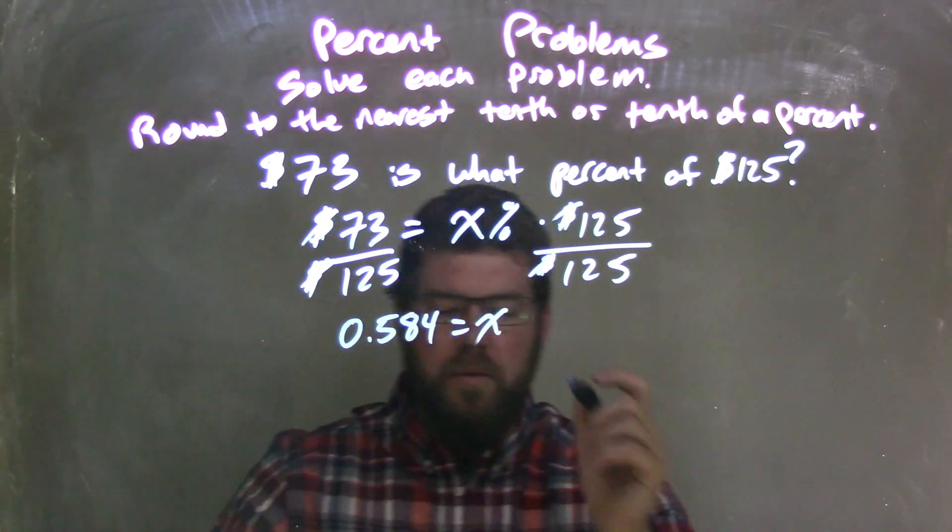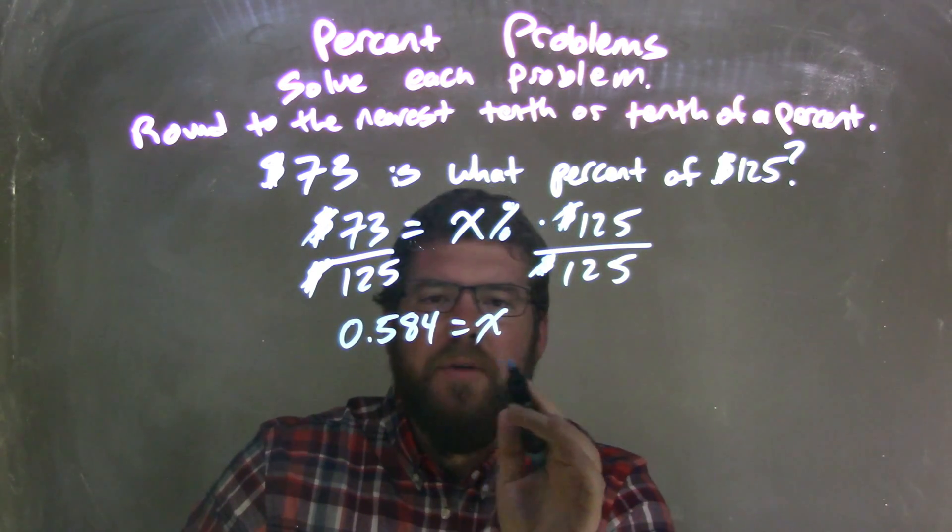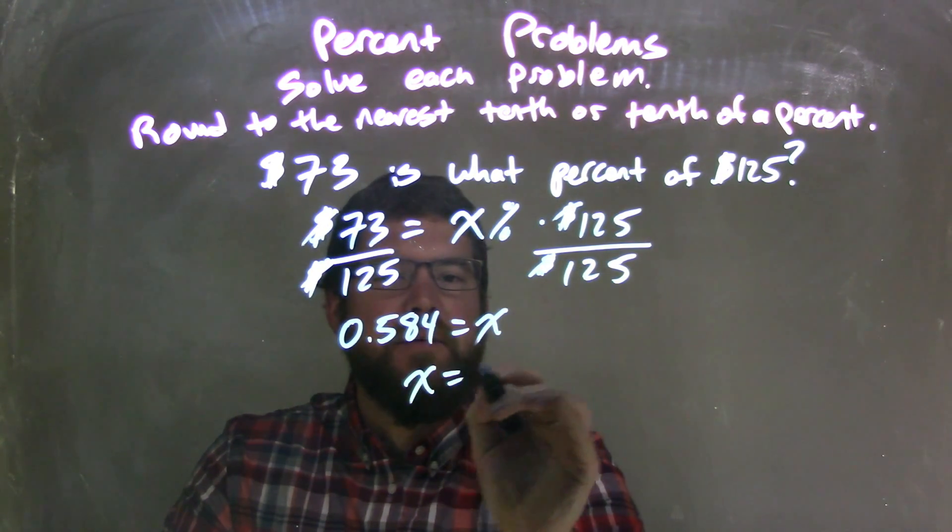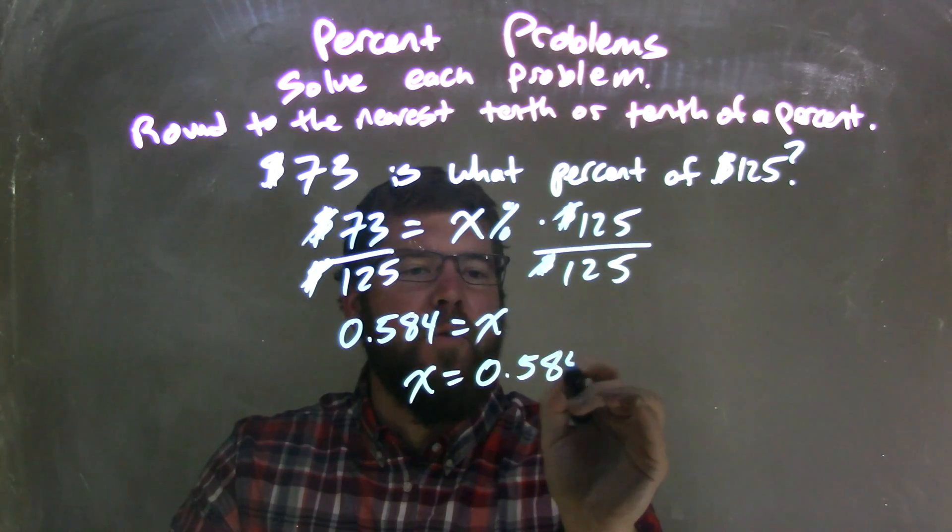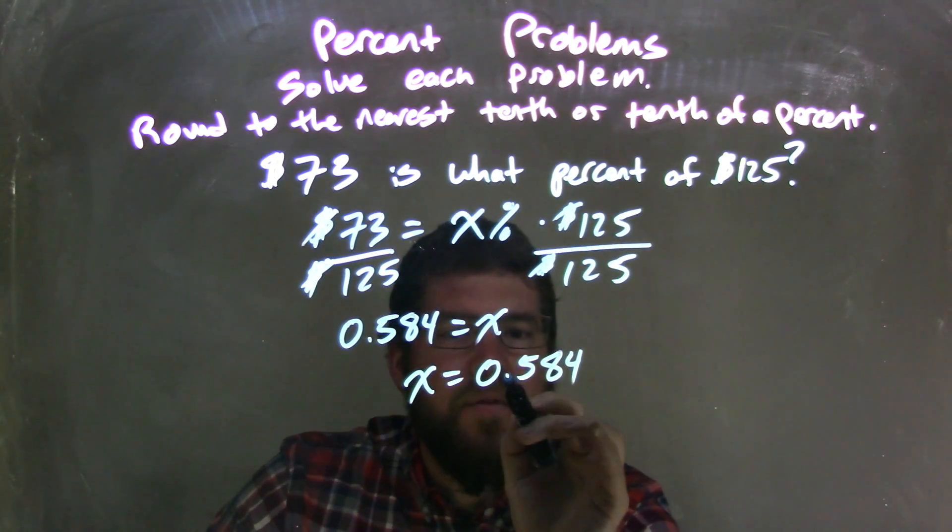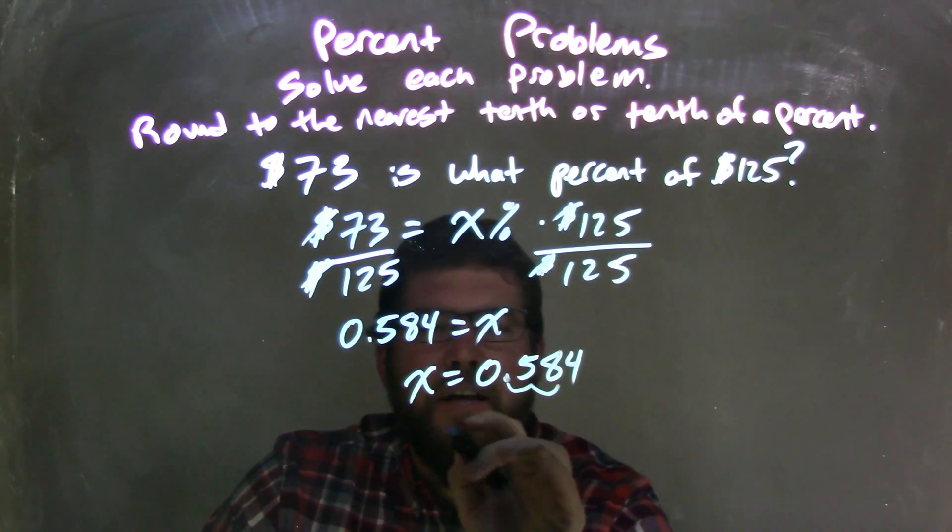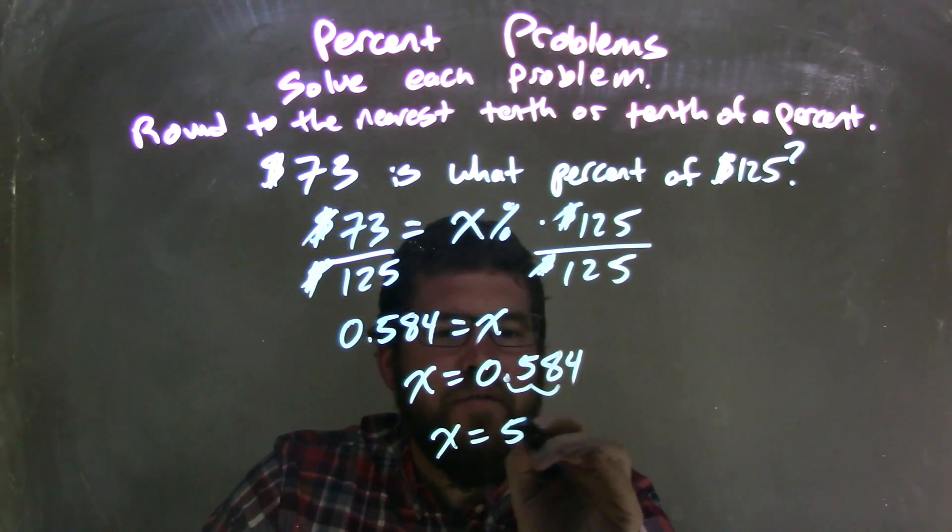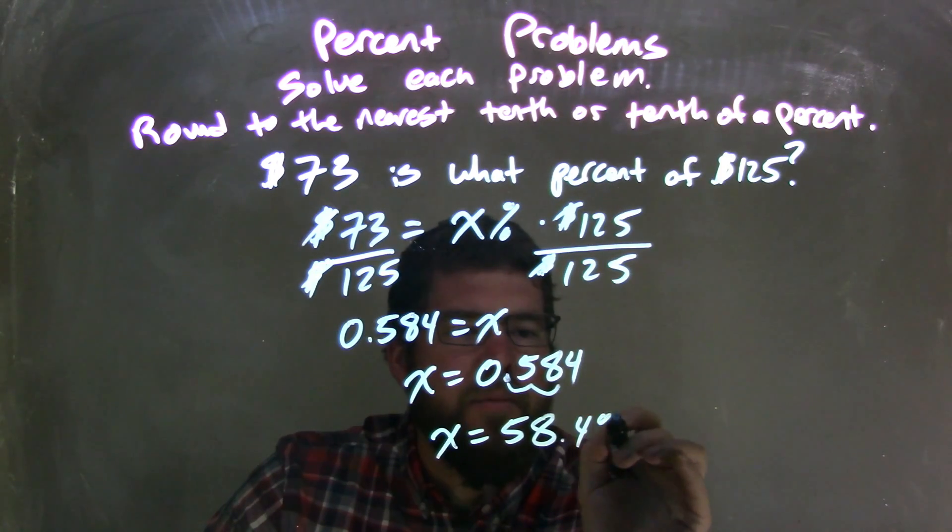Let's rewrite that to put x coming first. So x equals 0.584, and now I need to convert that to a percent. To do that, I would move the decimal place over two units, one, two, leaving me with x equals 58.4 percent.